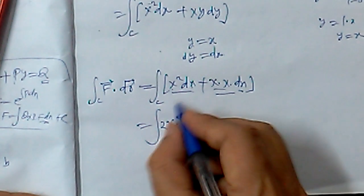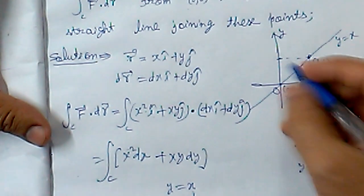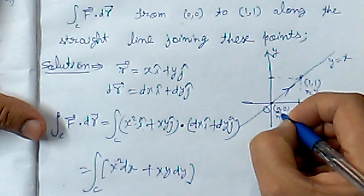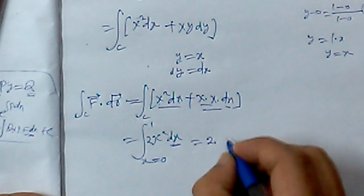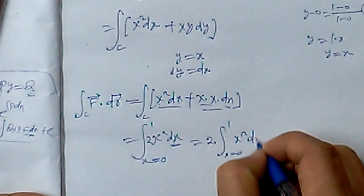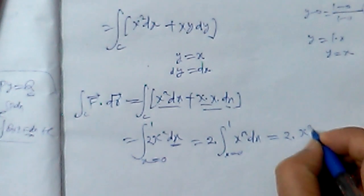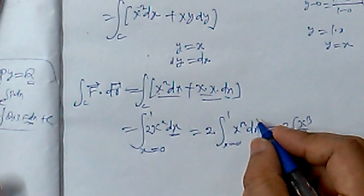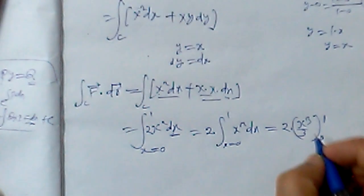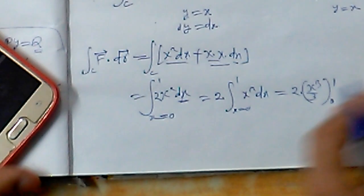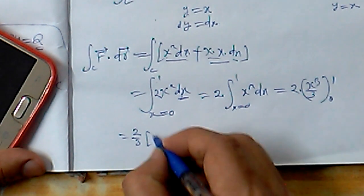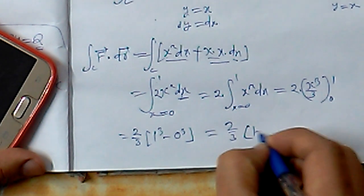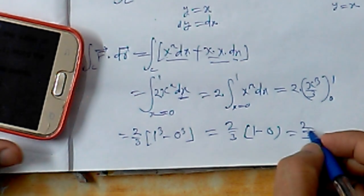This becomes x square dx plus x square dx equals 2 x square dx. The integration limits go from (0,0) to (1,1), so from 0 to 1. Two times integral of x square dx equals 2 times x cube upon 3, evaluated from 0 to 1. Applying limits: 2 by 3 times (1 cubed minus 0 cubed) equals 2 by 3. That's the answer.